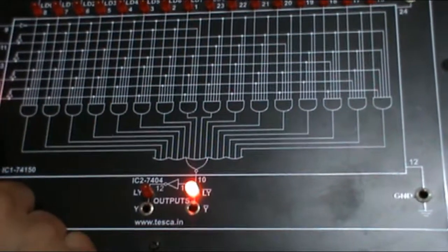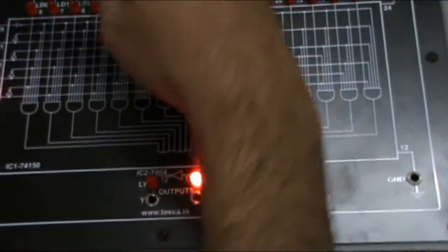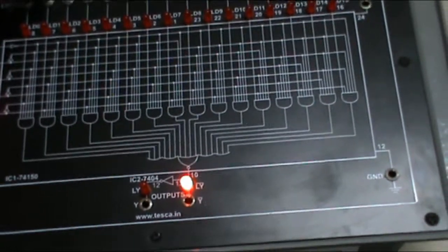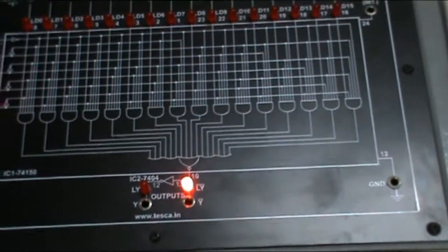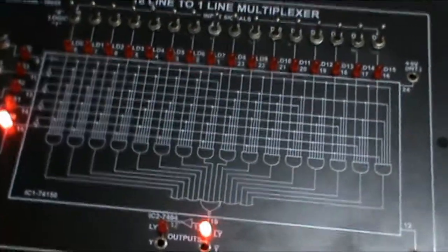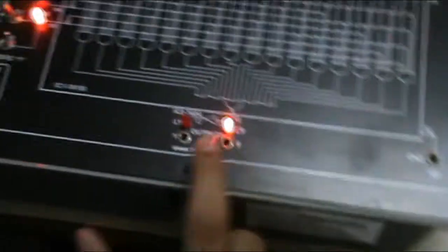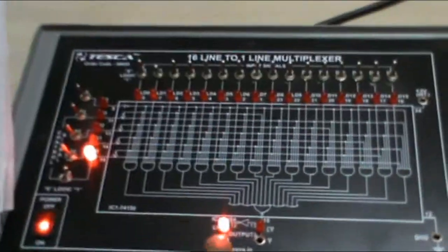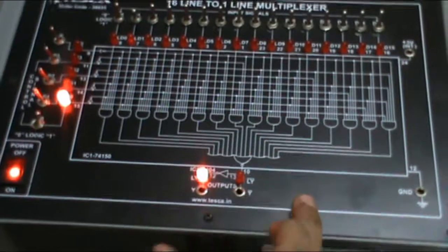When my control signal is 0001, I have two states for D0 or D1. As my input is 1, I take my D1 LED. First it is in 0 logic. My output is LY and LY bar is 0, 1. When I turn it to 1 logic, my output is 1, 0 of LY and LY bar.